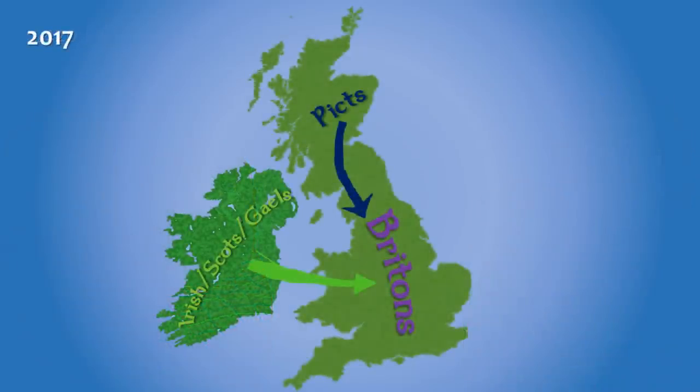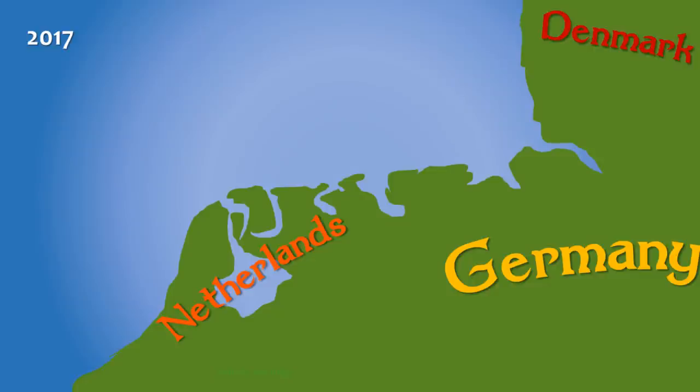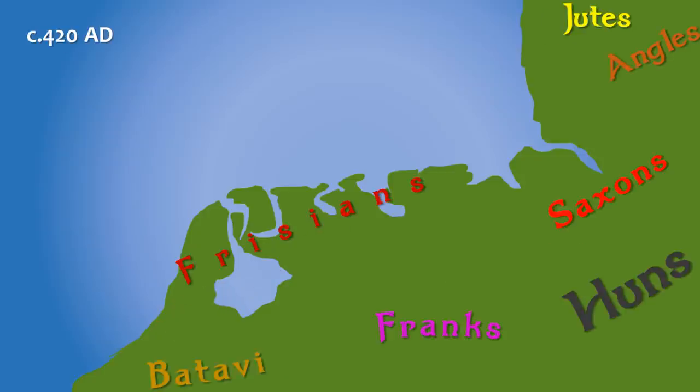For the rest of the story we need to cross over the North Sea to the countries that are today the Netherlands, Germany and Denmark, but back then were very different and were inhabited by various tribes such as the Frisians, the Jutes, the Angles and the Saxons — the last three being the main groups who we think came over during the Anglo-Saxon migration, although it's possible that other people such as the Batavi, the Franks, and even perhaps the Huns also moved over in smaller numbers.